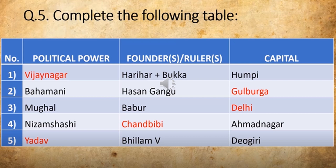Bahamani Kingdom capital — here again three options will be given: Gulbarga, Delhi, Ahmadnagar. You are going to click at the right one — that is Gulbarga.